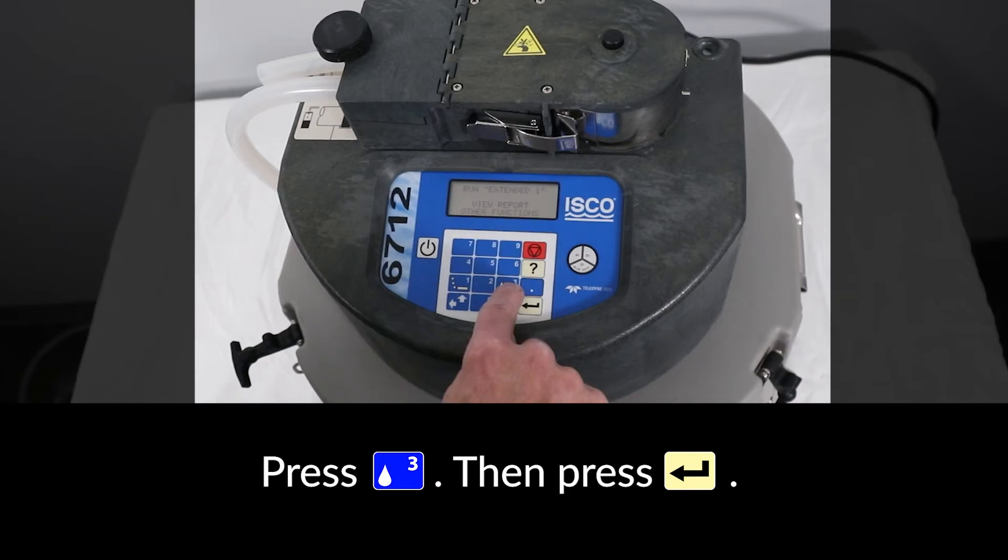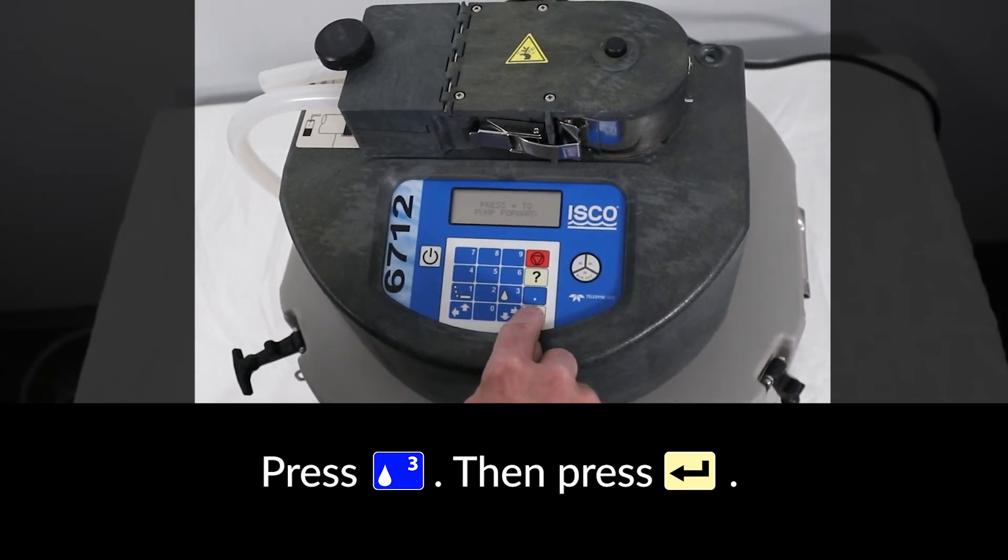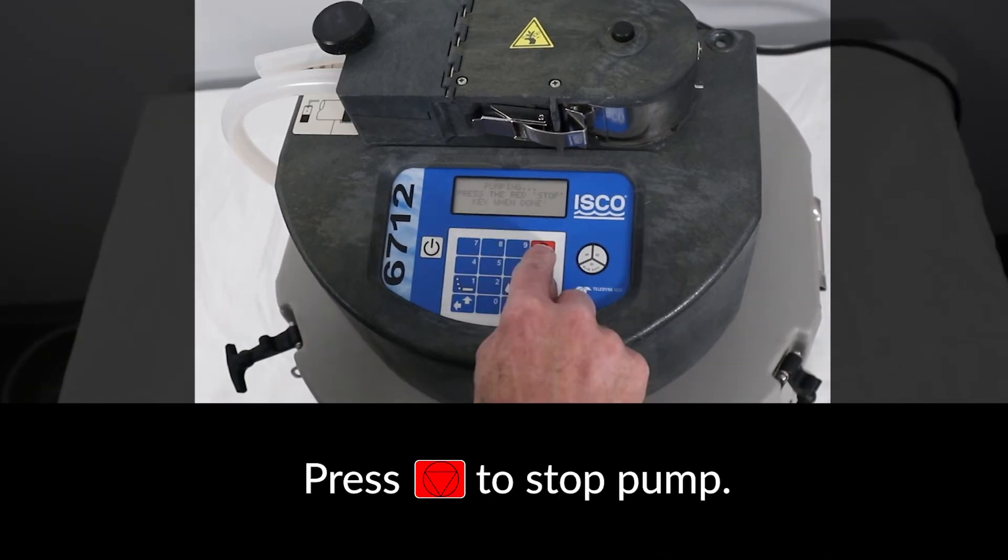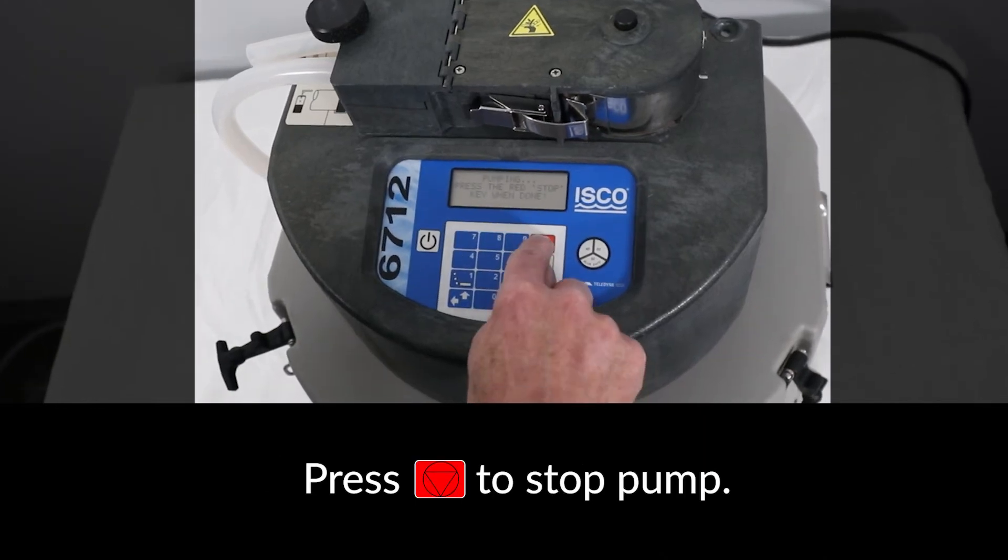Next, press the number 3 button followed by enter to run the pump in the forward direction. Then press the red stop key to stop the pump.